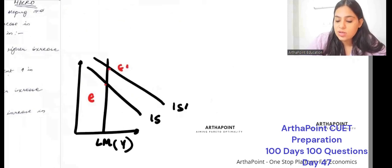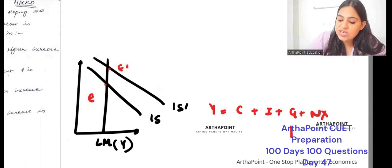Now just see this: Y equals C plus I plus G plus NX. G is increasing, that's why IS shifted to the right. Output is constant,